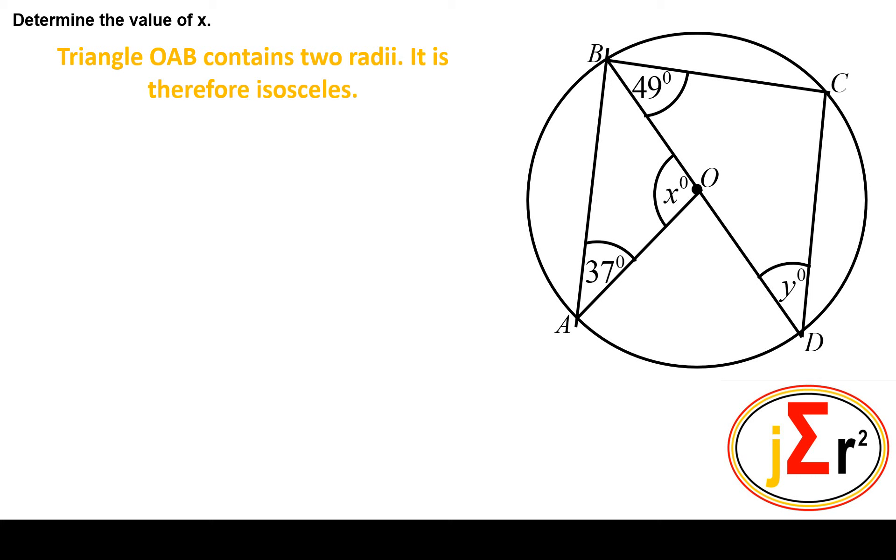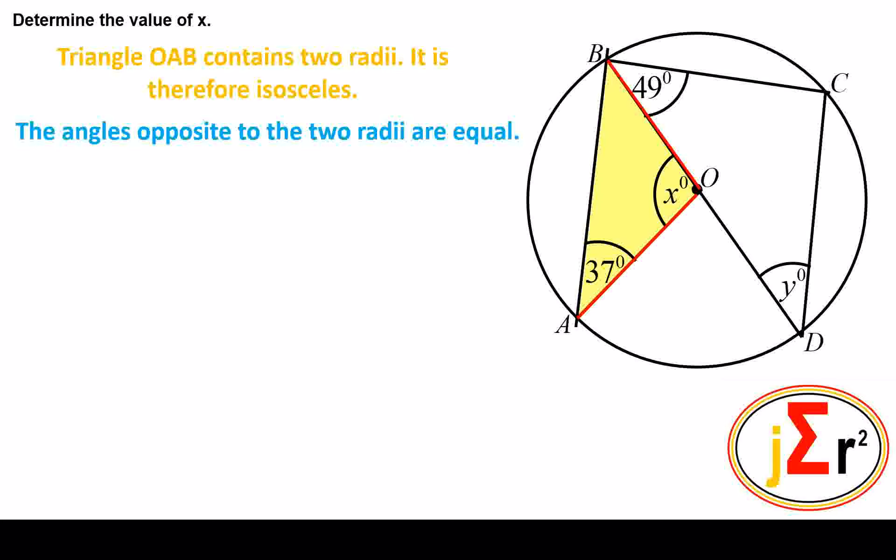Because two sides are radii of the circle, the two sides will be equal in length and that will cause this triangle to be isosceles with those two radii being the two equal sides of the triangle.